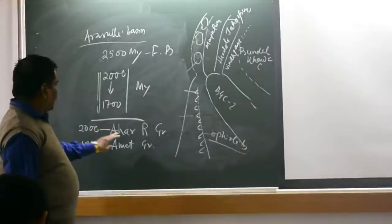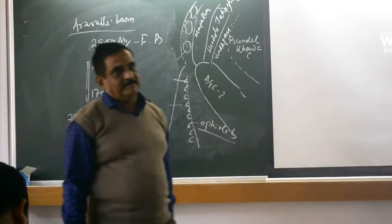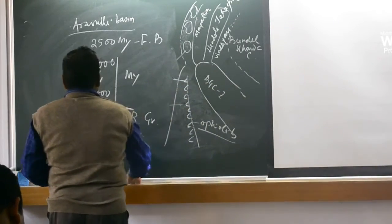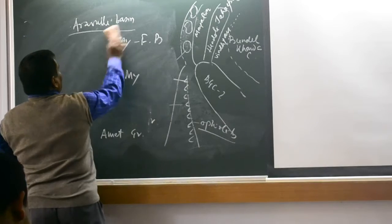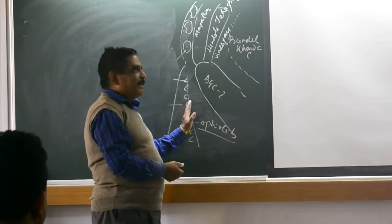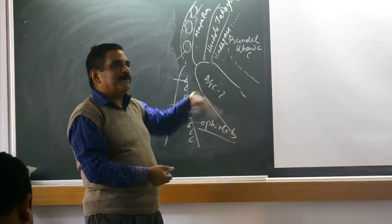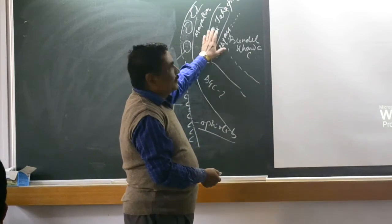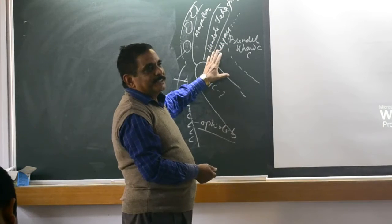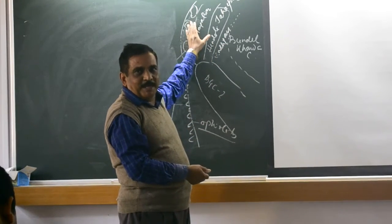This is the place — this is Ahar River granite, Amet granite; these are from this area. So this is the first orogeny. There was no orogeny before — there was no subduction. So we cannot talk about any orogeny during that earlier time. The first orogeny took place during Aravali time, when these granites are produced.